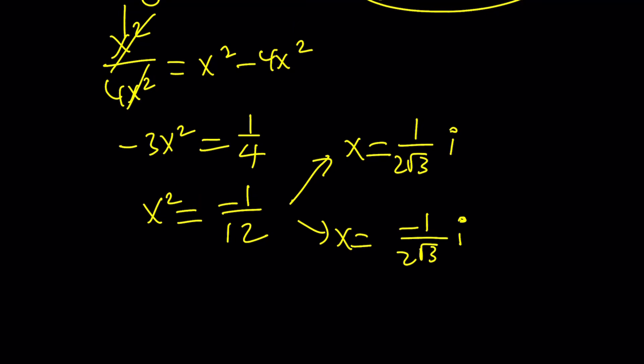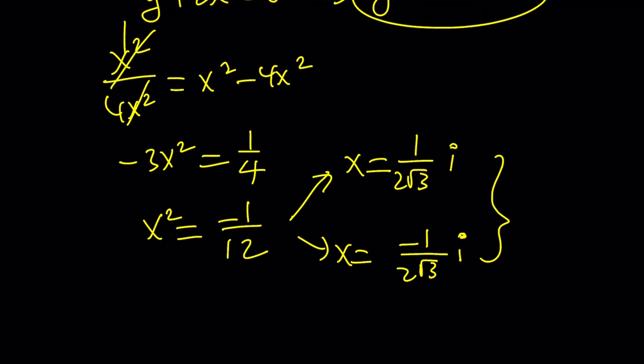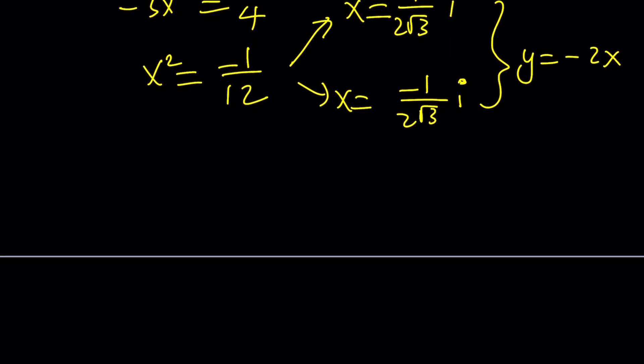And y is equal to negative 2x. In other words, we're just going to multiply each of these by negative 2 to get the y value. So, we get two ordered pairs from here. 1 over 2 root 3i, comma, negative 1 over root 3i. And negative 1 over 2 root 3i with positive 1 over root 3i. Those are going to be two of the solutions.